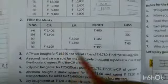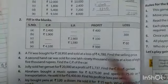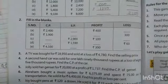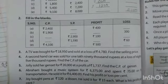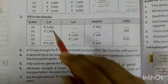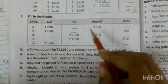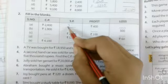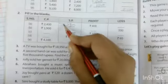Now fill in the blanks. Cost price is 2,400 and profit is shown. It means sell price is greater than cost price. So add 2,400 with 400 and you get 2,800 rupees as the sell price.